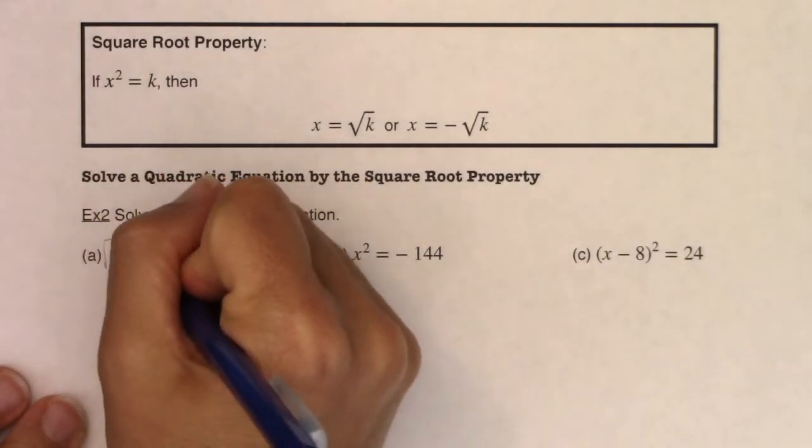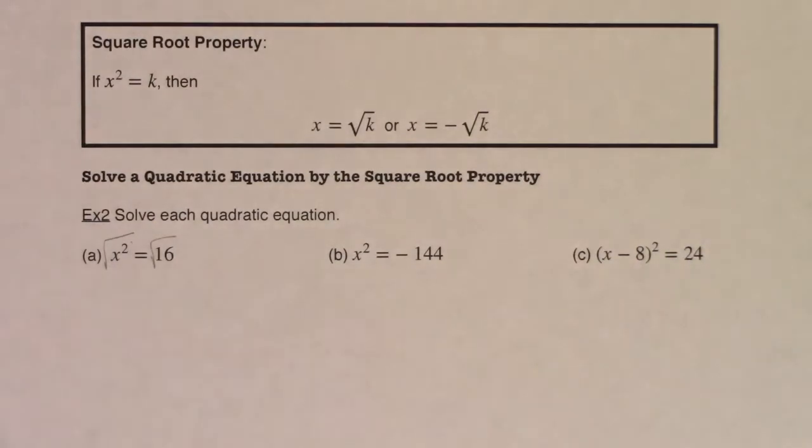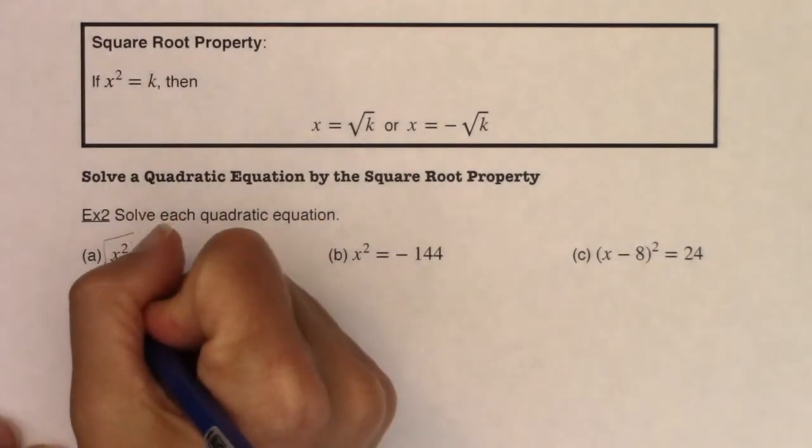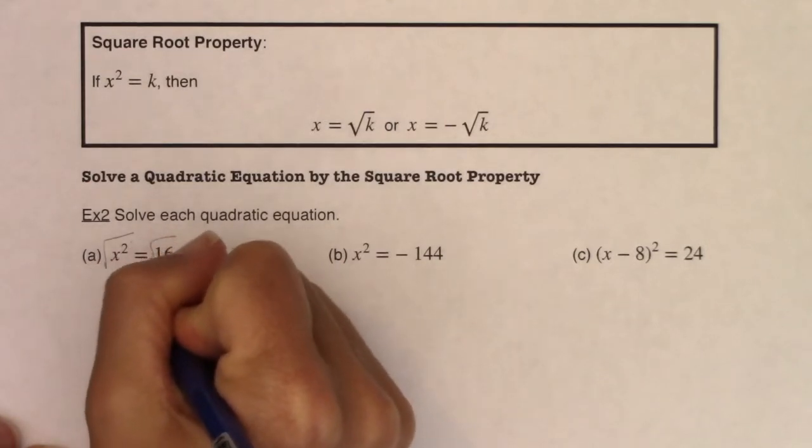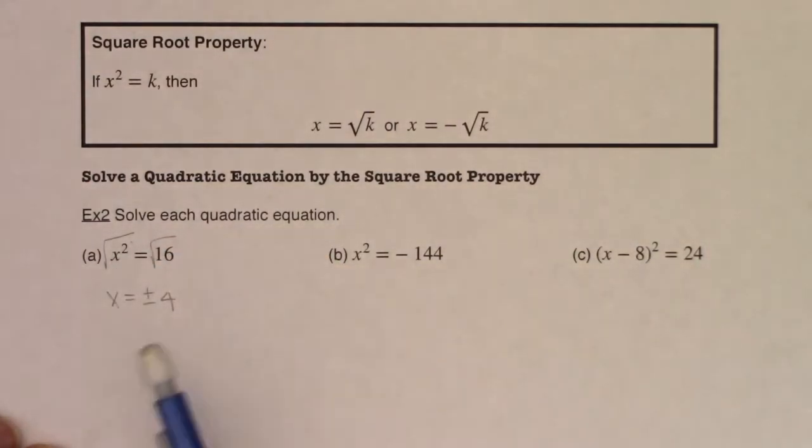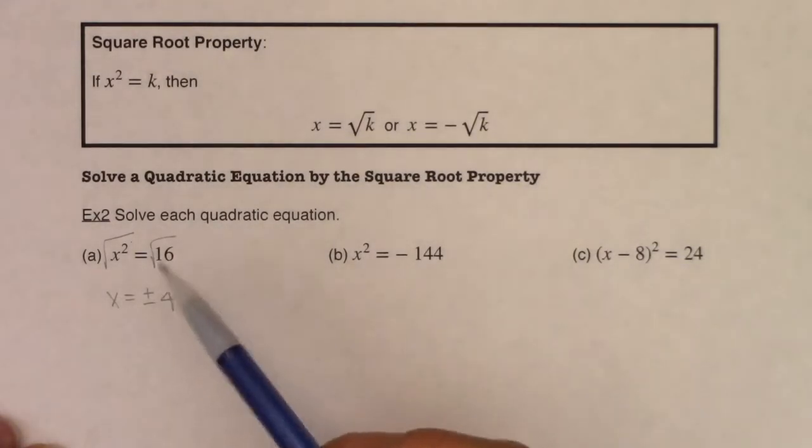So I will take the square root of both sides and what you have to remember to do is if you're starting with a number that's squared, a variable that's squared, you don't know if you started with the positive square root of that number or the negative square root. So technically my answer here is plus or minus 4. And we tend to forget to put the plus or minus so we want to just be mindful of that.